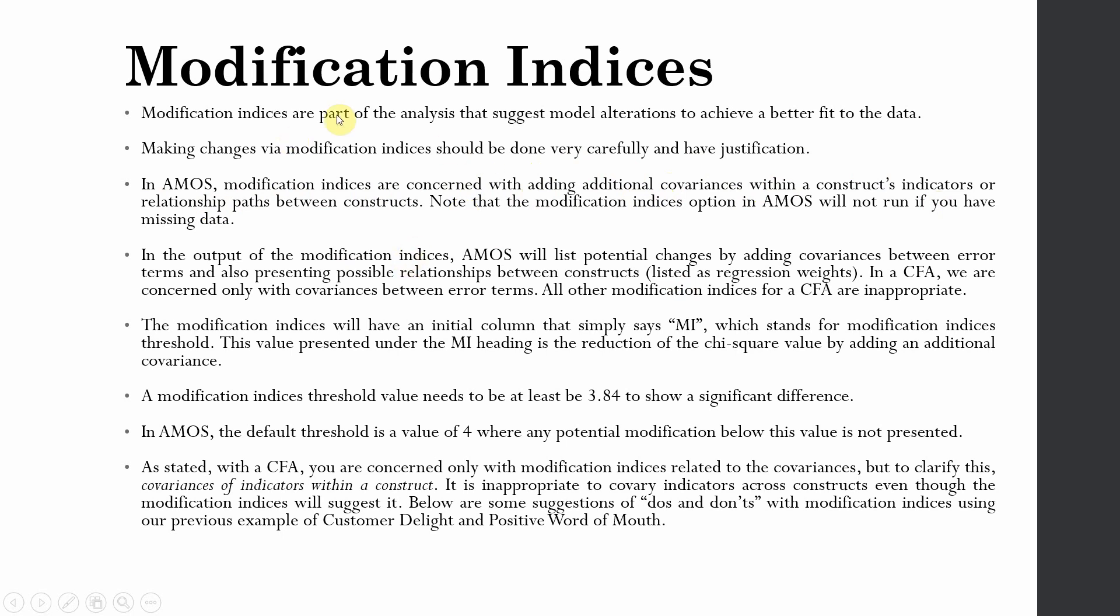In AMOS, modification indices are concerned with adding additional covariances between the error terms of a similar construct. AMOS will give you modification indices and it will tell you what covariances shall be drawn between which error terms. The modification indices will have an initial column labeled MI in the output, and then you use that output to draw covariances between error terms.